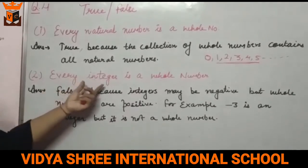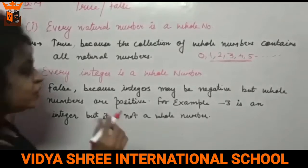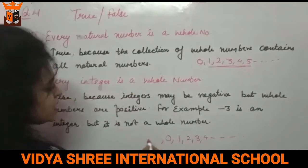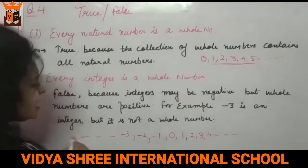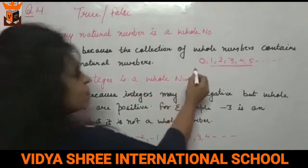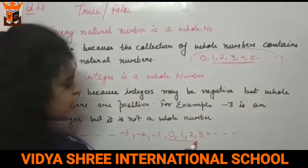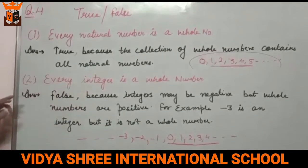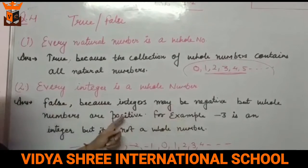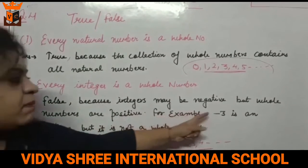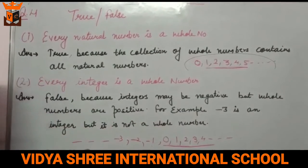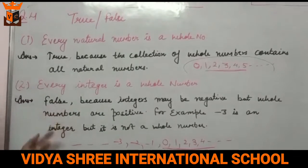Next part: Are all integers whole numbers? No, because integers include 0, positive and negative numbers. But whole numbers start from 0 and are positive only. For example, minus 3 is an integer, but it is not a whole number. No negative number is a whole number. So this statement is false.